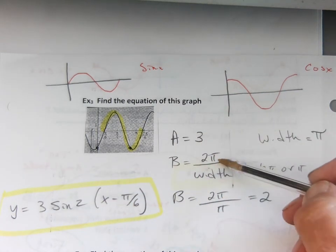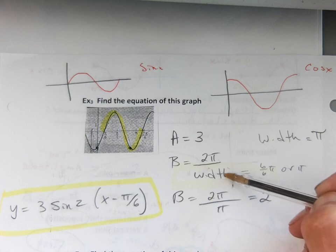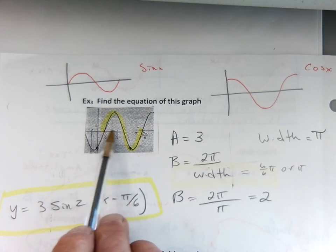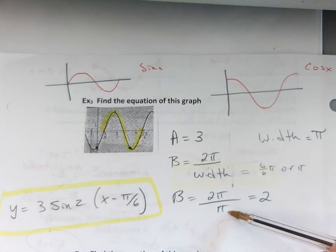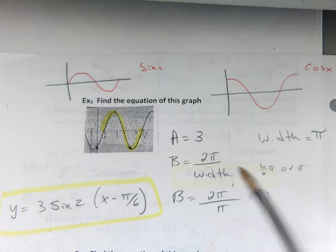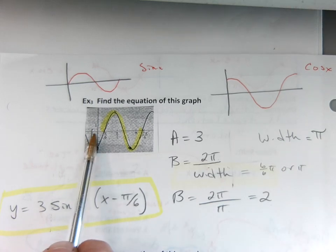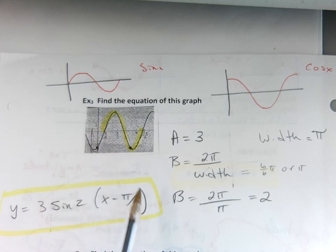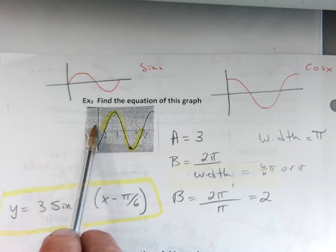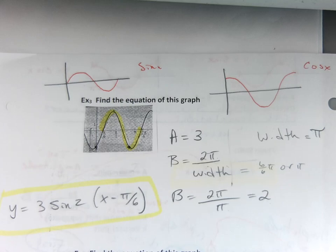We notice the amplitude was 3 to negative 3. The frequency, we always take 2π, always 2π, divided by the width. So we realized the width was π. So we went 2π divided by 2. So the frequency is 2. So the 2 goes here for the frequency. And then it did get shifted over. In fact, it got shifted over π/6. So it's a minus π/6 because it's the opposite of the inside.